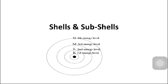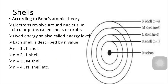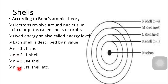To understand electronic configurations, you should know about shells and sub-shells. Let's discuss them first. According to Bohr's atomic theory, electrons revolve around the nucleus in circular paths called shells or orbits. Each orbit has fixed energy, so it is also called an energy level. Each shell is described by an n-value, and n can have values n1, n2, n3, and n4.